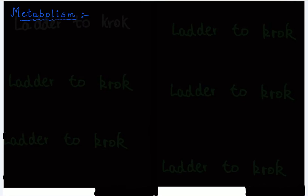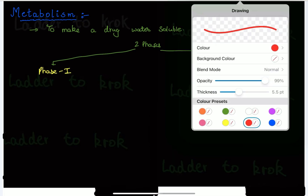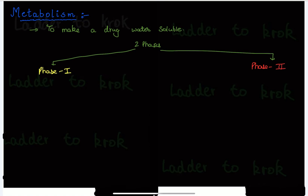Welcome back. Now we are going to discuss metabolism. The aim of metabolism is to make a drug water soluble. This metabolism usually has two phases: phase one and phase two.